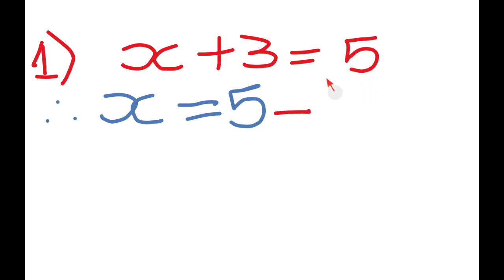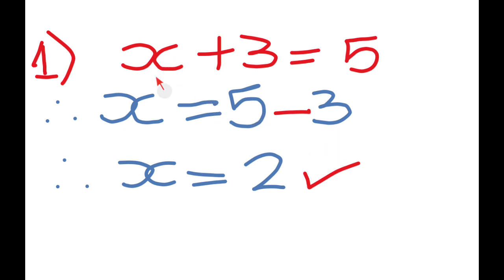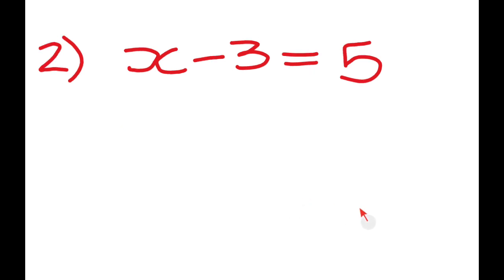Remember that whenever you take anything from one side to the other, it must change sign. So your plus 3 becomes negative 3, and you go: therefore X equals — now you've got X on the left hand side on its own, which is the goal when solving for X. That equals 5 minus 3, which gives you 2. To check: what is the number that when added to 3 gives us 5? That number is 2, so it checks out.